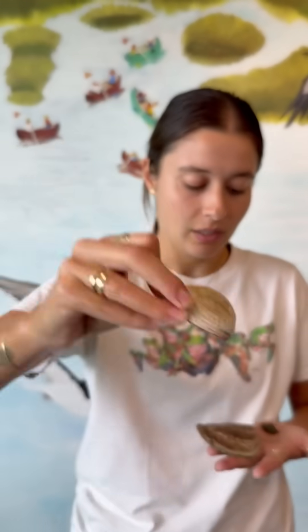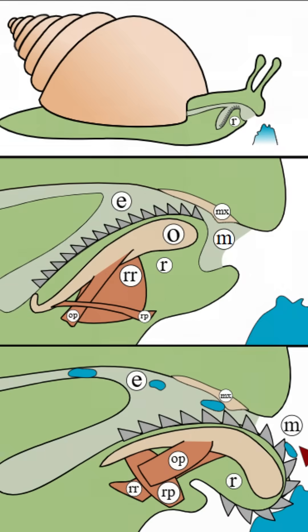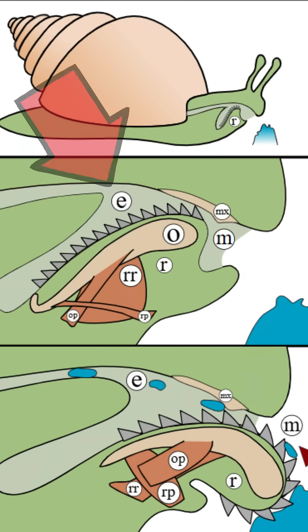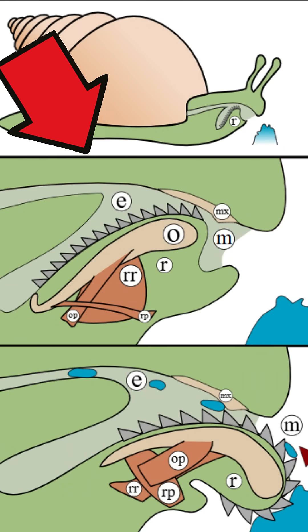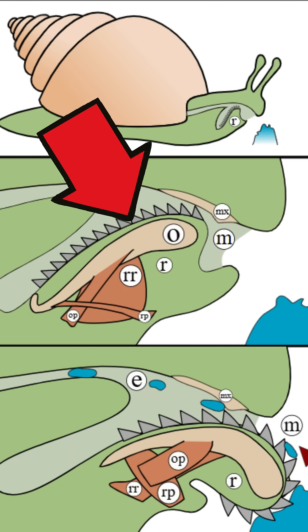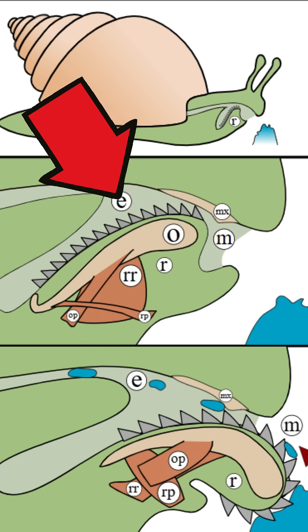They don't just drill holes in oyster shells like this one — you can also see the holes on the outside of this clam shell. Basically what this little snail does is it uses a radula, which is basically a toothy organ that helps to drill the hole inside the shell.